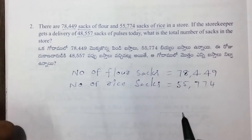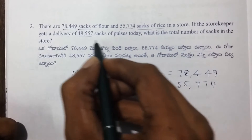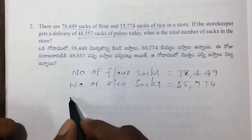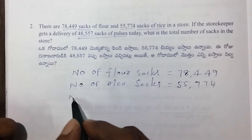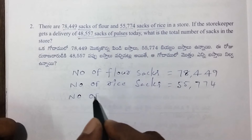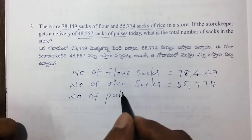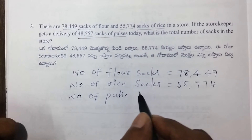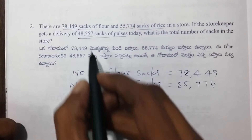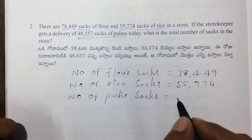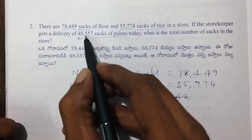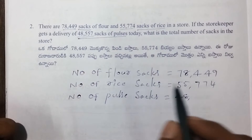Rice is 55,774. Next, number of pulse sacks: 48,557.